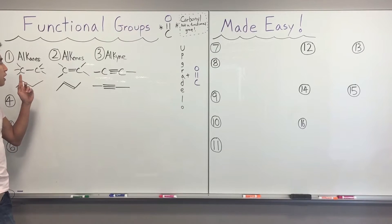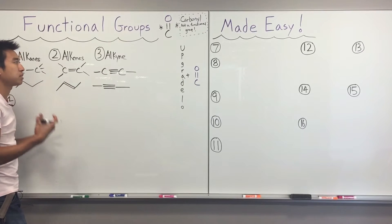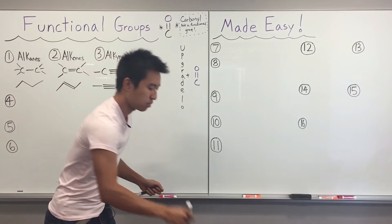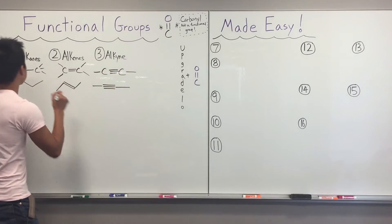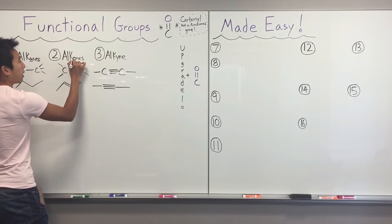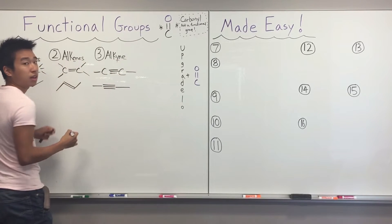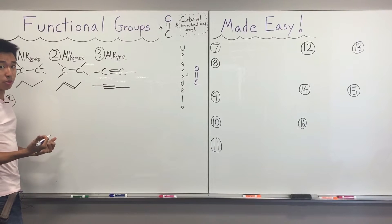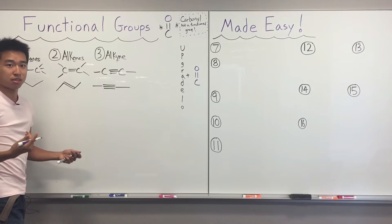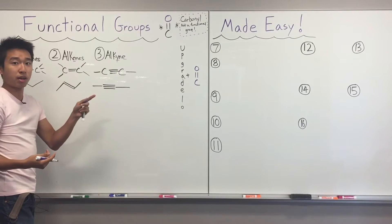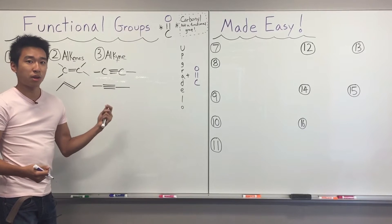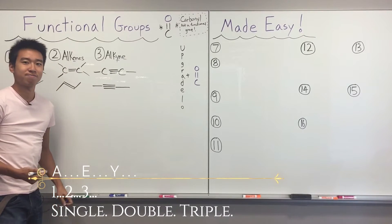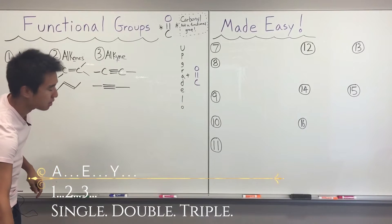So that's alkanes, alkenes, and alkynes. How do you remember the difference? Think about the main difference in their names — it's just one letter: A, E, and Y. A comes first in the alphabet, E comes second, and Y comes last. And it's a single, double, triple bond. So A, E, Y — one, two, three — single, double, triple bond. Hope that helps!